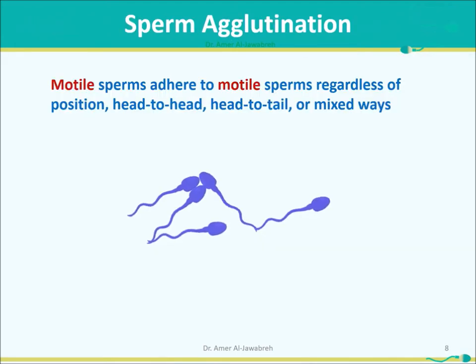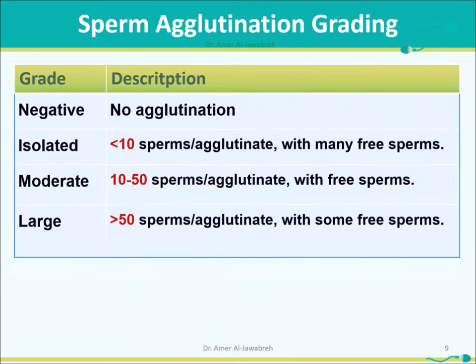Sperm agglutination occurs when motile sperms adhere to other motile sperms regardless of position — head-to-head, head-to-tail, or in mixed ways. Agglutination is graded as: Negative (no agglutination), Isolated (less than 10 sperms per agglutinate), Moderate (10–50 sperms per agglutinate), and Large (more than 50 sperms per agglutinate). Agglutination may indicate anti-sperm antibodies.